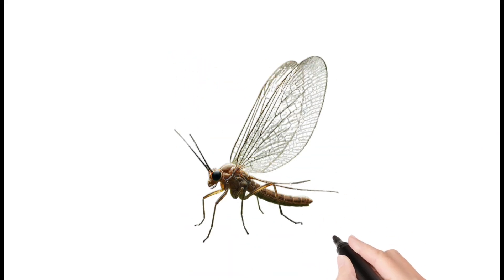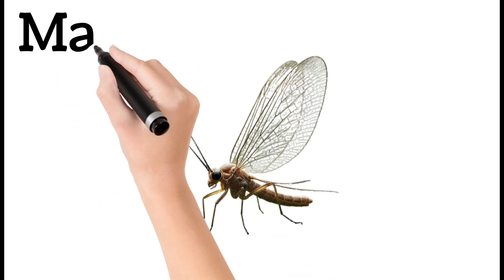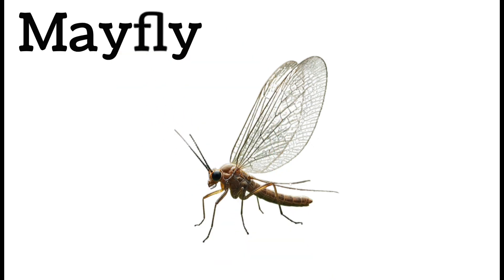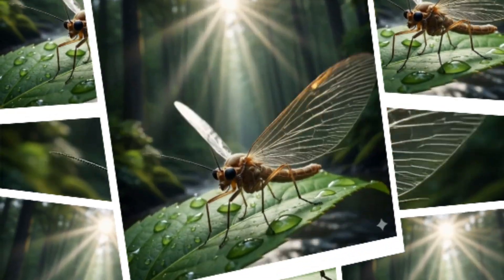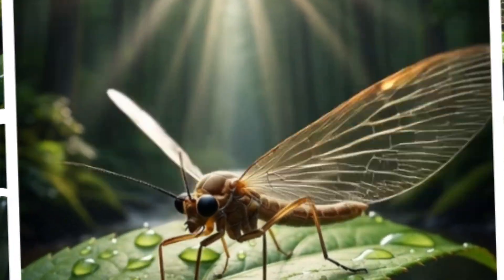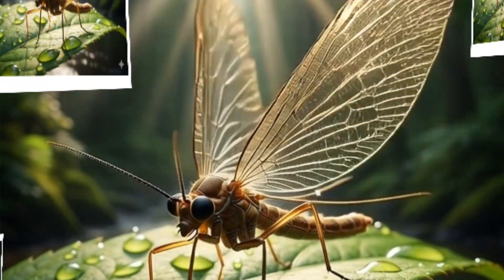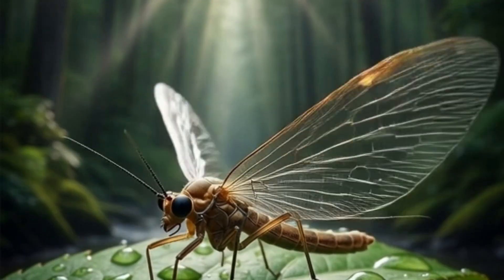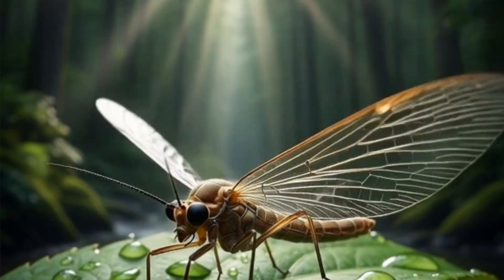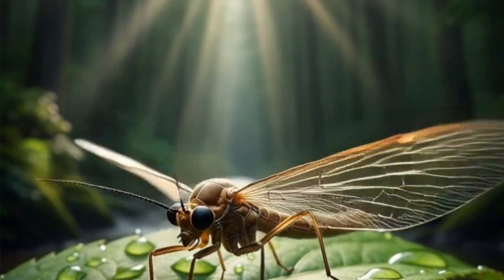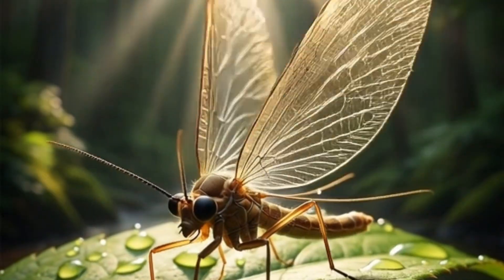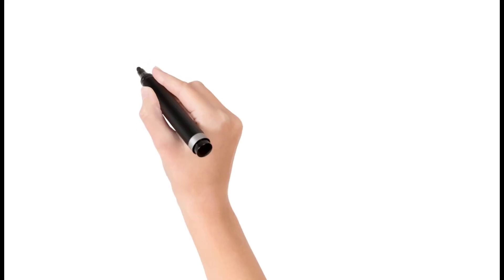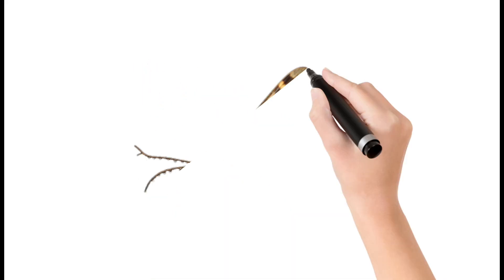Mayfly: lives only one day as an adult. Found near rivers and lakes. Larvae live underwater for months. Adults do not eat. Important for fish diet.